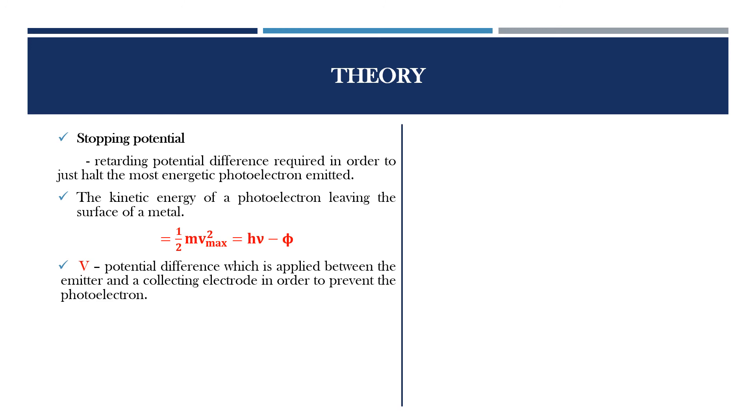Capital V be the potential difference which is applied between the emitter and the collecting electrode in order to prevent the photoelectron. We can equate the potential difference to the kinetic energy. That means eV equals half mv squared. eV equals h nu minus phi. Or we can write as V equals h by e nu minus phi by e, equation 1.